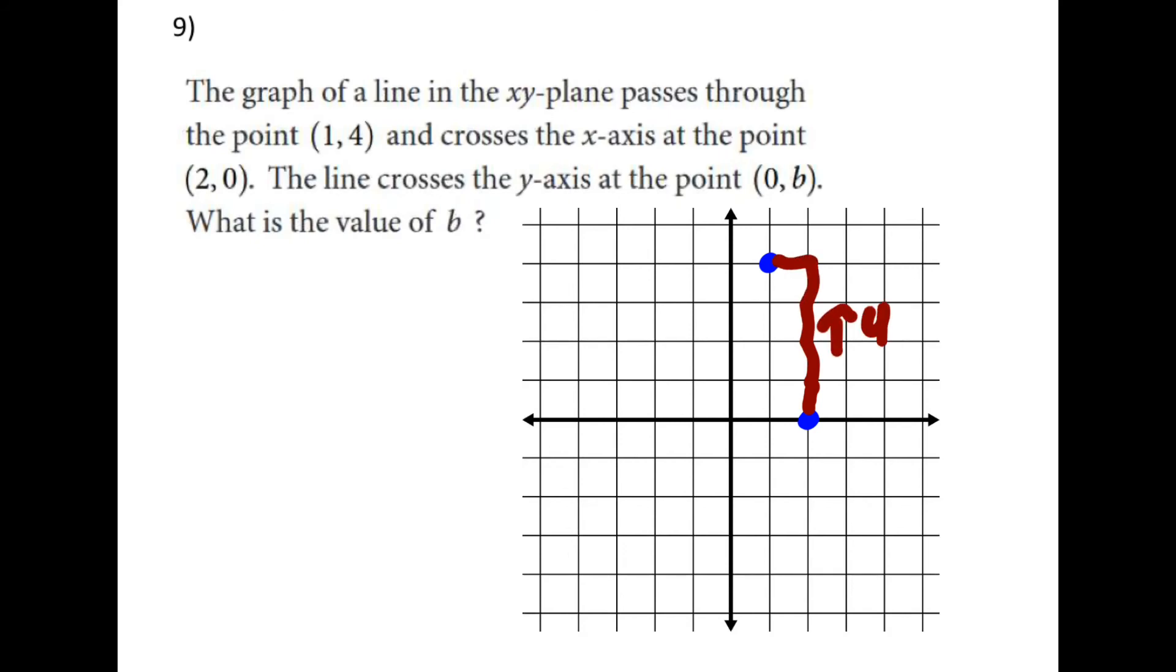So if this was me, I would probably count up 1 2 3 4 and over 1. So up 4 and over 1. And just repeat that pattern. And go up 1 2 3 4 and over 1 again. And that's my next point, which is going to be my b value. So here, b is going to be 8. Because once you figure out that rise over run pattern, it just repeats over and over and over again.